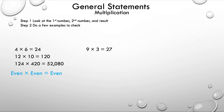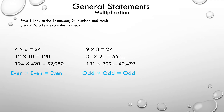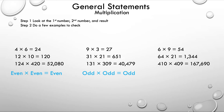Let's take a look at the next example: 9 times 3 is 27, 31 times 21 equals 651, and 131 times 309 equals 40,471. The general statement: odd times odd is equal to odd. Now the last example: 6 times 9 equals 54, 64 times 21 equals 1,344, and 410 times 409 equals 167,690.